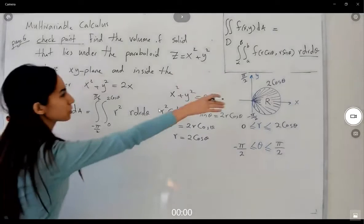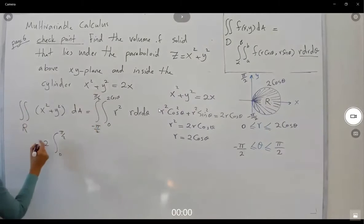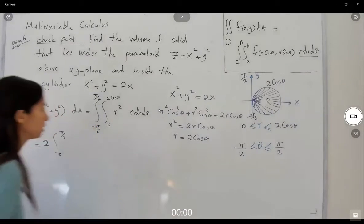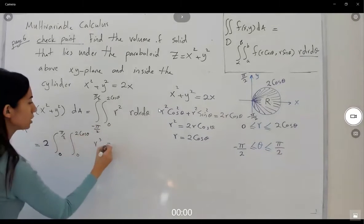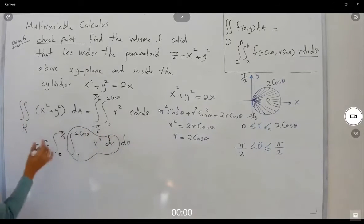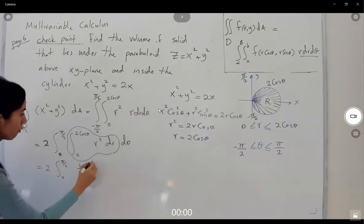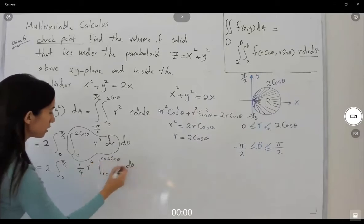Because of symmetry, we can write this as 2 times the integral from 0 to pi over 2, with the inner integral from 0 to 2 cosine theta of r cubed dr dθ. Taking the inner integral first, we get 2 times the integral from 0 to pi over 2 of r to the fourth over 4, evaluated from 0 to 2 cosine theta, dθ.